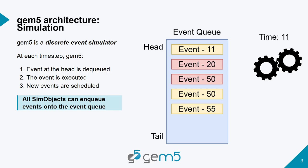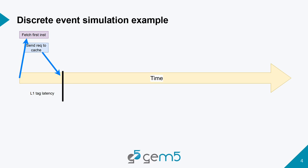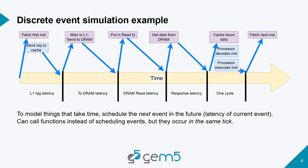An example of this is your CPU trying to fetch an instruction. That results in sending a request to the iCache later on in the future to simulate the fetch latency, then to simulate the L1 tag latency. An event to handle a miss in the L1 is scheduled if it's a miss, and then there's a latency to DRAM. When you start enqueuing events based on latencies, function calls get to a point where you find the data, and then events are scheduled to get the data back to the requester.